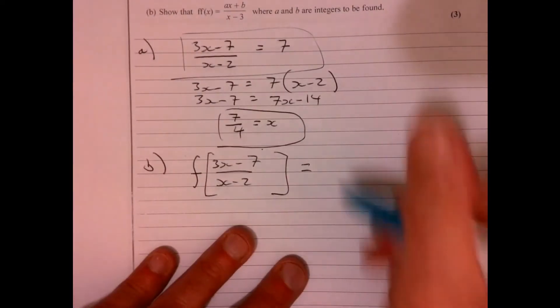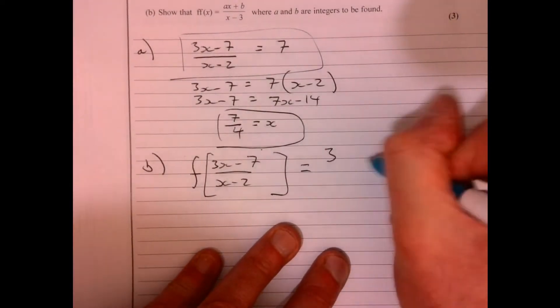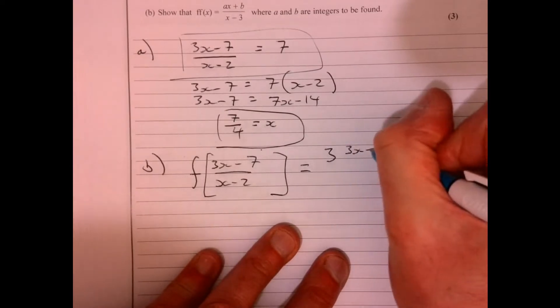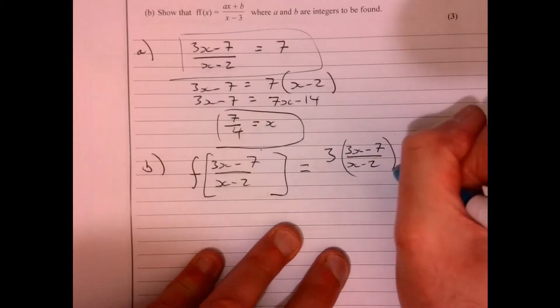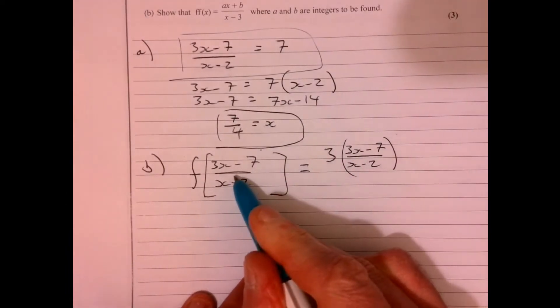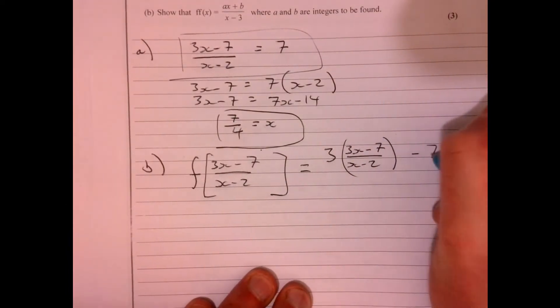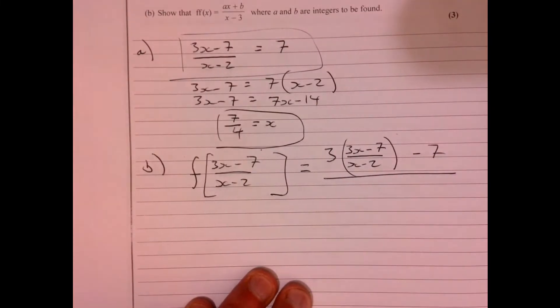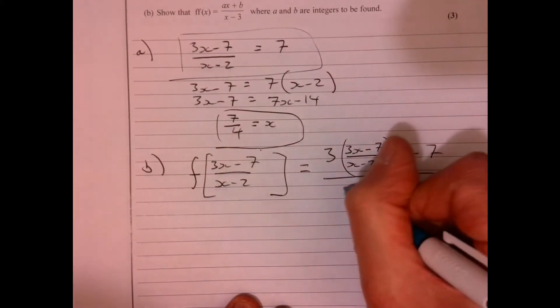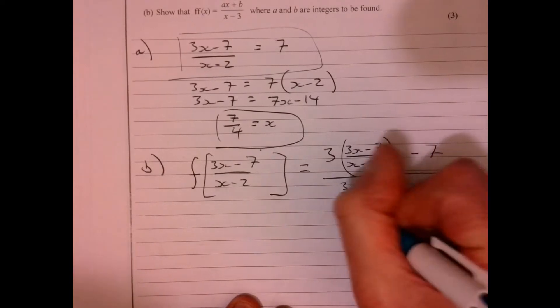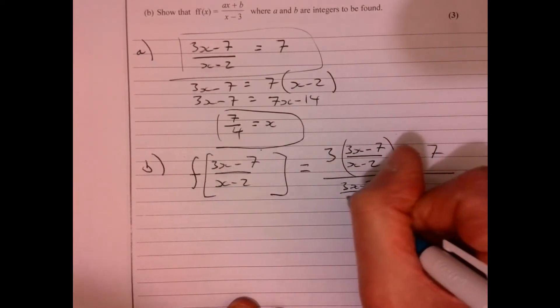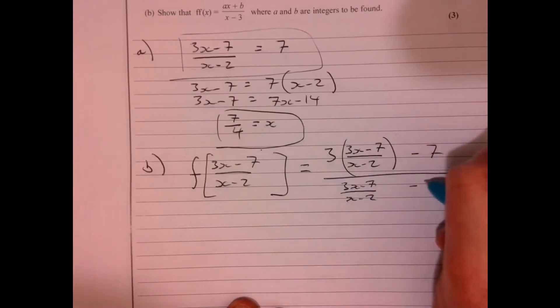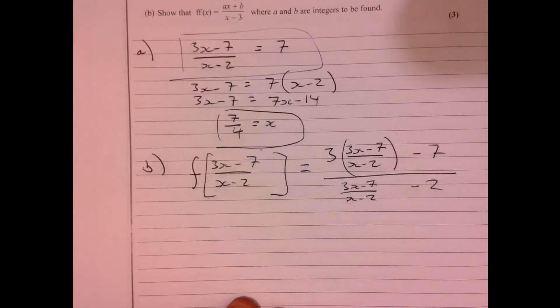Now again, the easiest thing to do is just to write it out in full. Don't worry about actually trying to work stuff out. It looks a bit yucky and horrible. So we've got 3 times this, and then we've taken away 7. And then we've got, again, just the 3x minus 7, because just feeding that into the x part there, x minus 2, and we're going to take away 2.